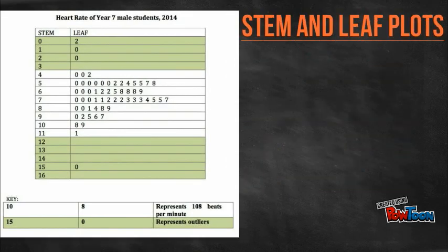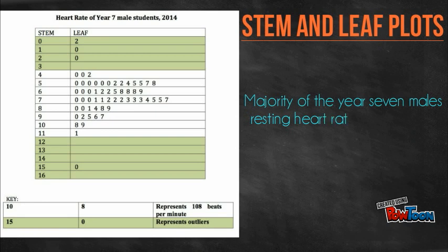This stem and leaf shows that the majority of the Year 7 boys' resting heart rates lie between 50 beats per minute and 80 beats per minute.